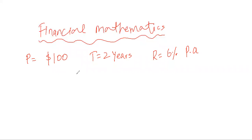Compound interest — in easier words we can say that profit on profit is basically called compound interest. So let's suppose you are keeping your hundred dollars for two years and the bank gives you six percent per annum at compound interest. At the end of the first year the total amount in your account is going to be 106 dollars. At the end of the second year you will not be getting six percent on 100, but six percent on the current amount of 106 dollars. So profit on profit is basically called compound interest.